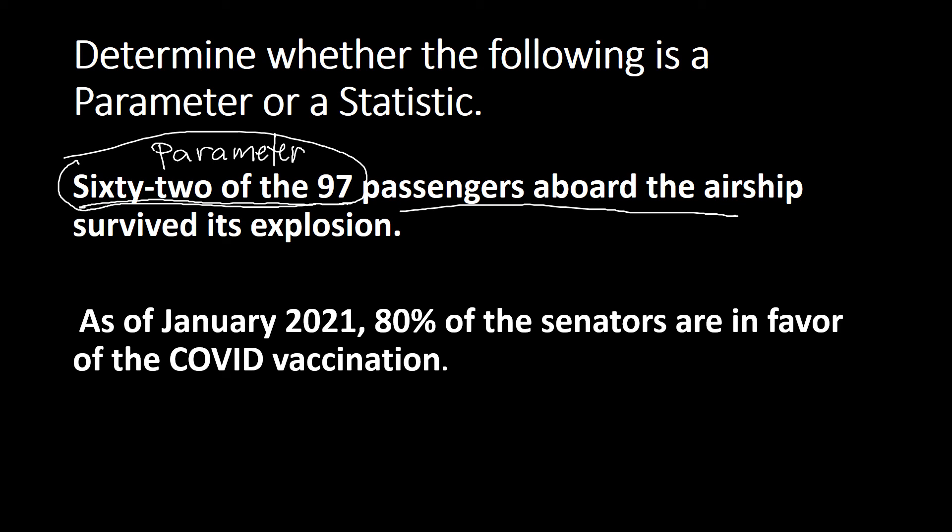Next: As of January 2021, 80 percent of the senators are in favor of the COVID vaccination. The descriptive measure is 80 percent. It is describing the senators. When you have a name that refers to an entire group, that is a population — unless a specific number is given alongside it, in which case it would be a sample. Since we only have 'the senators,' that is the population, and so 80 percent is a parameter.